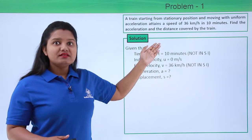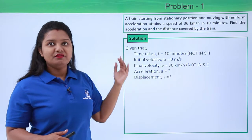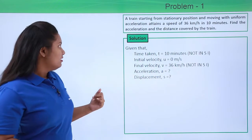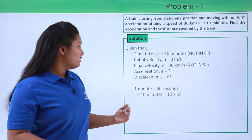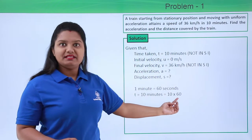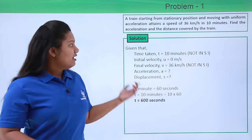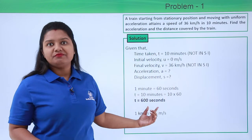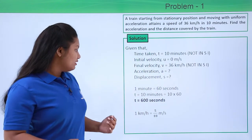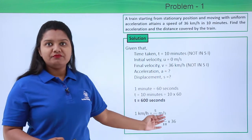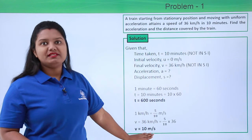Before proceeding towards the solution, let us convert these two non-SI units to SI. We know that one minute equals 60 seconds, so 10 minutes equals 10 multiplied by 60, which is 600 seconds. We also know that one kilometer per hour equals 5/18 meters per second, so 36 kilometers per hour equals 5/18 multiplied by 36, which is 10 meters per second.